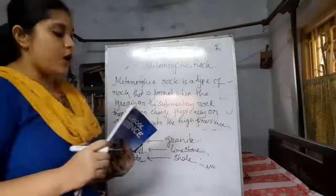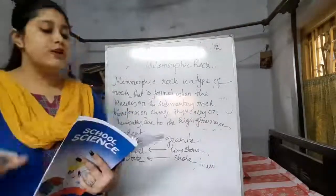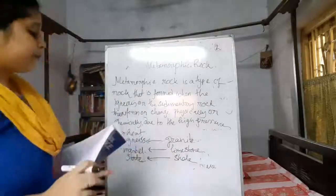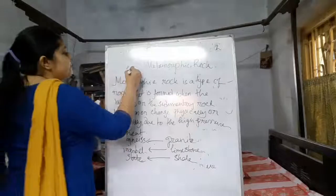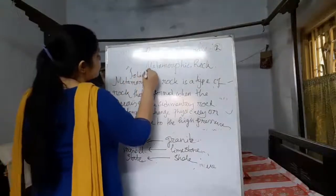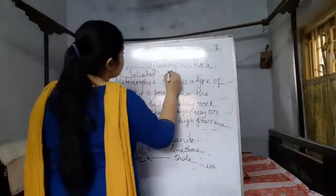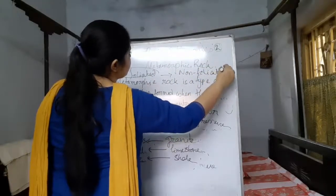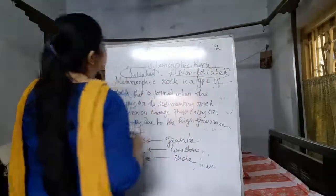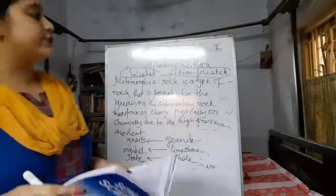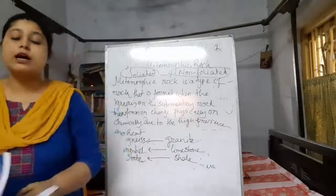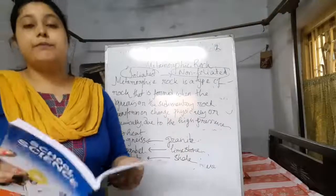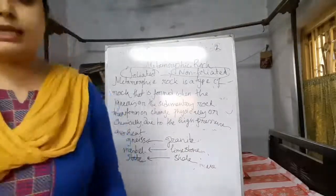Metamorphic rocks are of two types: foliated, or layered, and non-foliated, or non-layered. This is enough for metamorphic rocks. In the next video, we are going to discuss about minerals and ore, and how we can extract metals from them. Thank you.